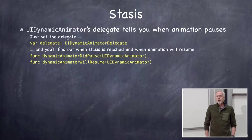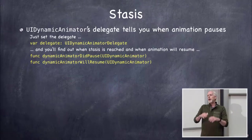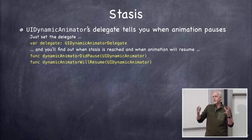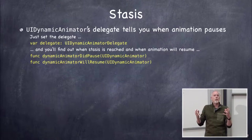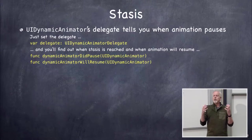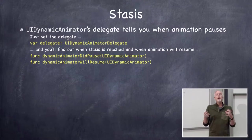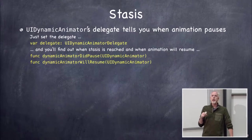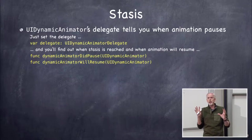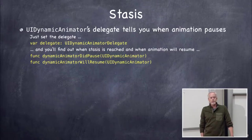Most of the time we design these animation mechanisms to come to a stop, then maybe a push happens and it goes active again. You can find out when the animator reaches stasis with UIDynamicAnimatorDelegate, which has two methods: didPause and willResume. It tells you when nothing is moving and when it needs to resume.